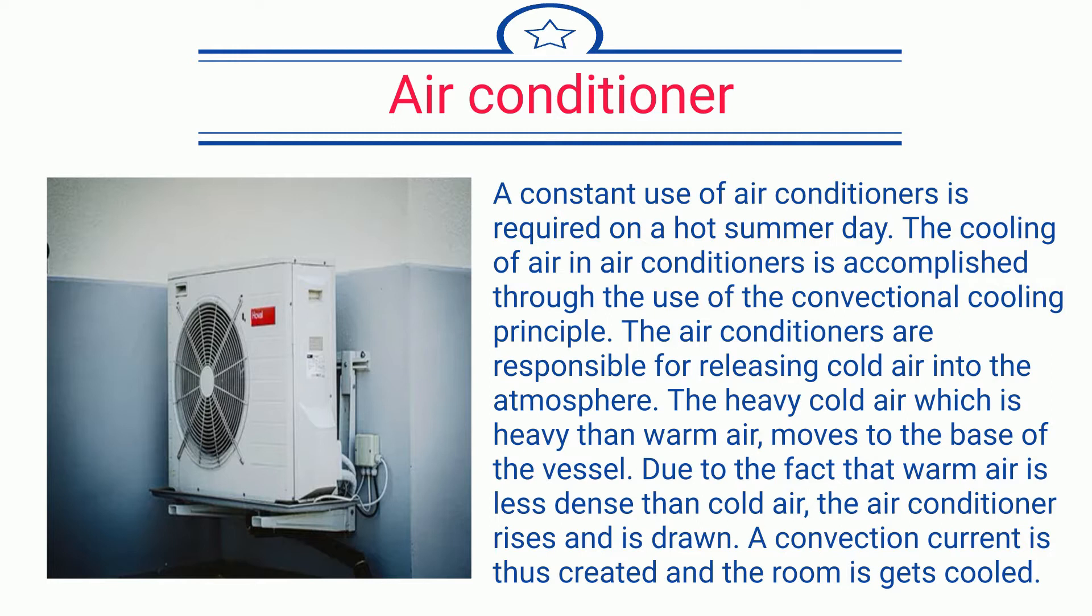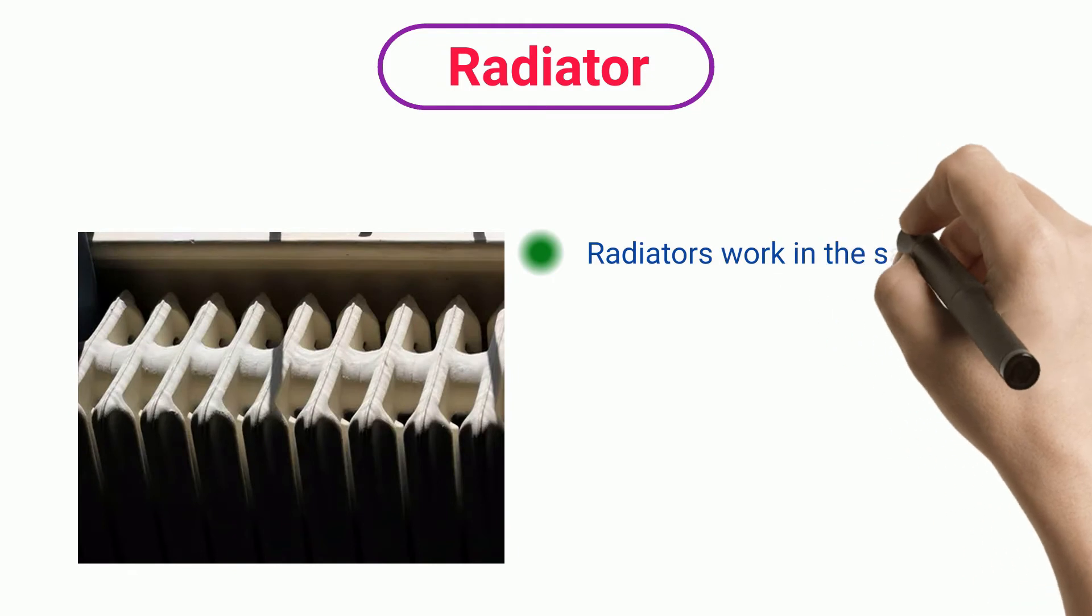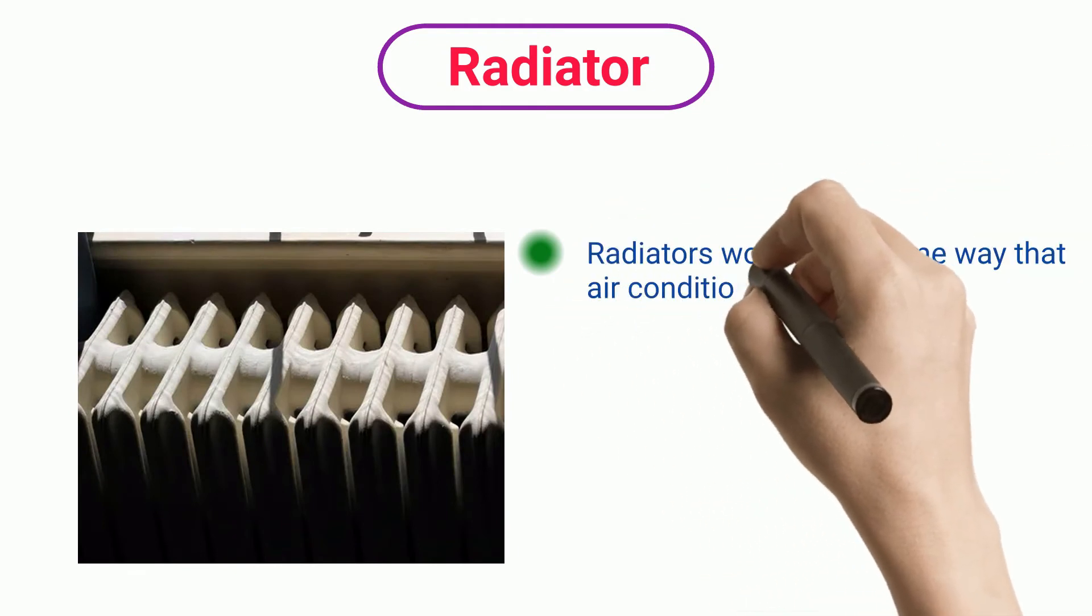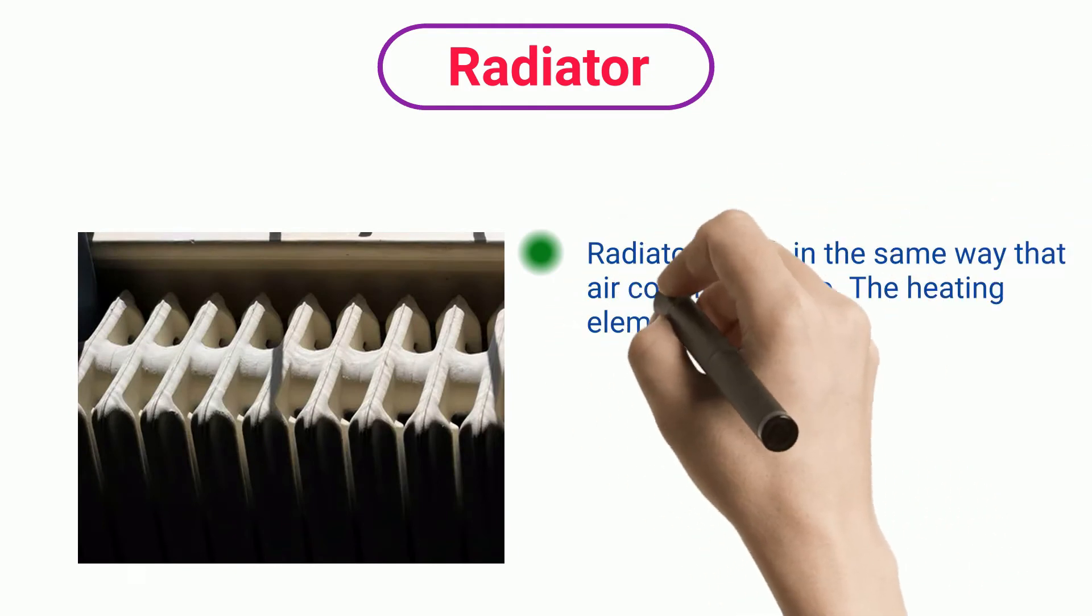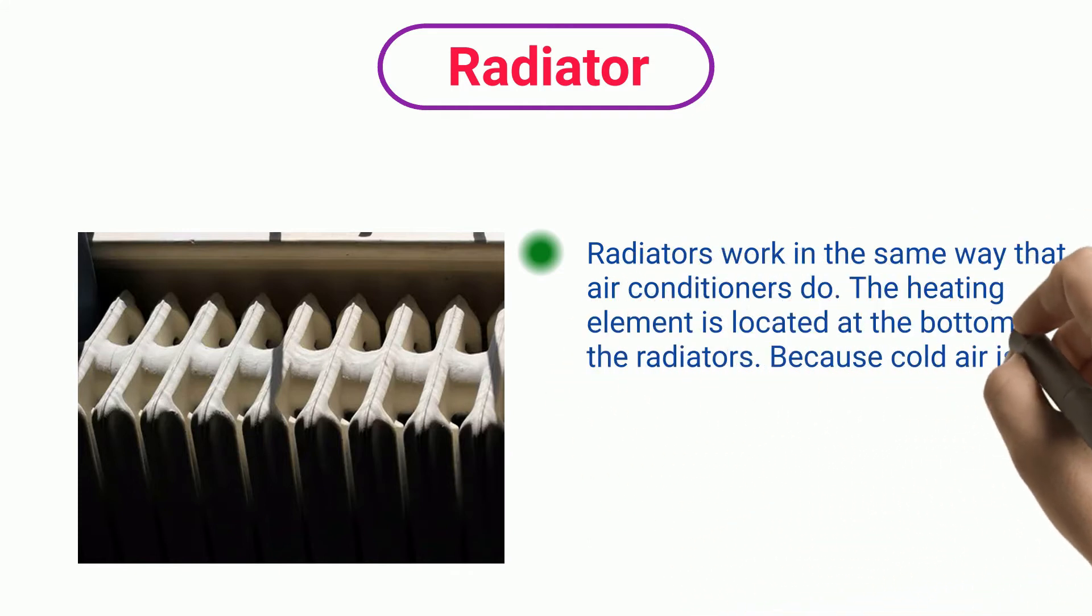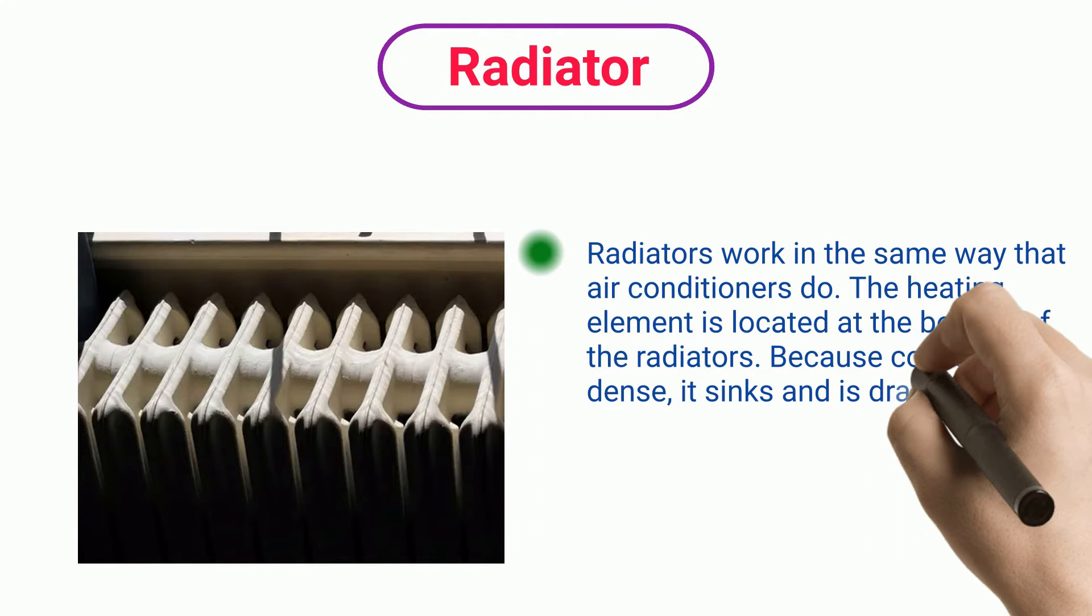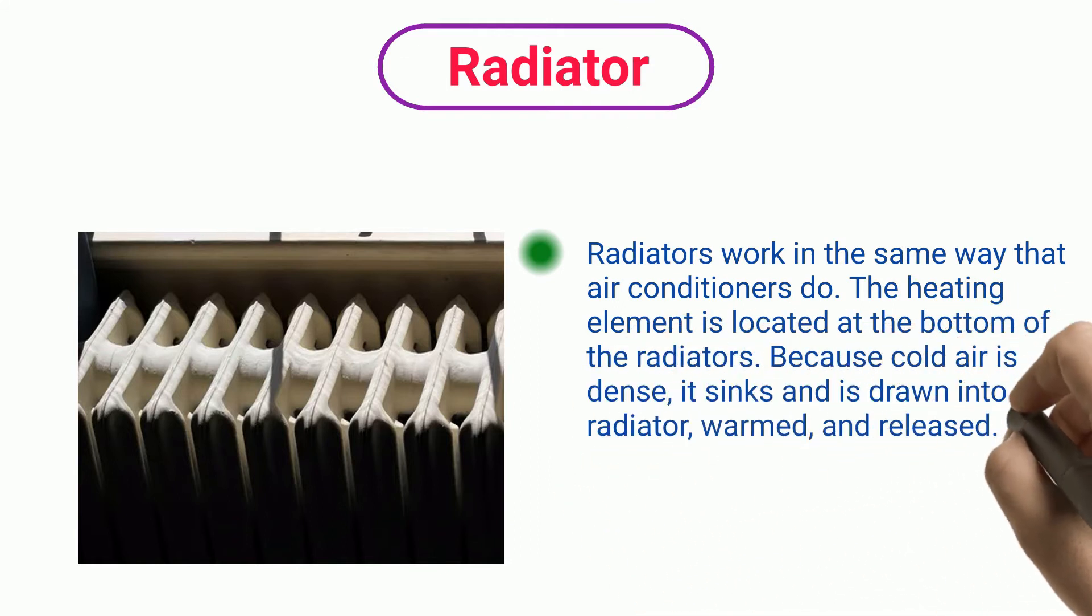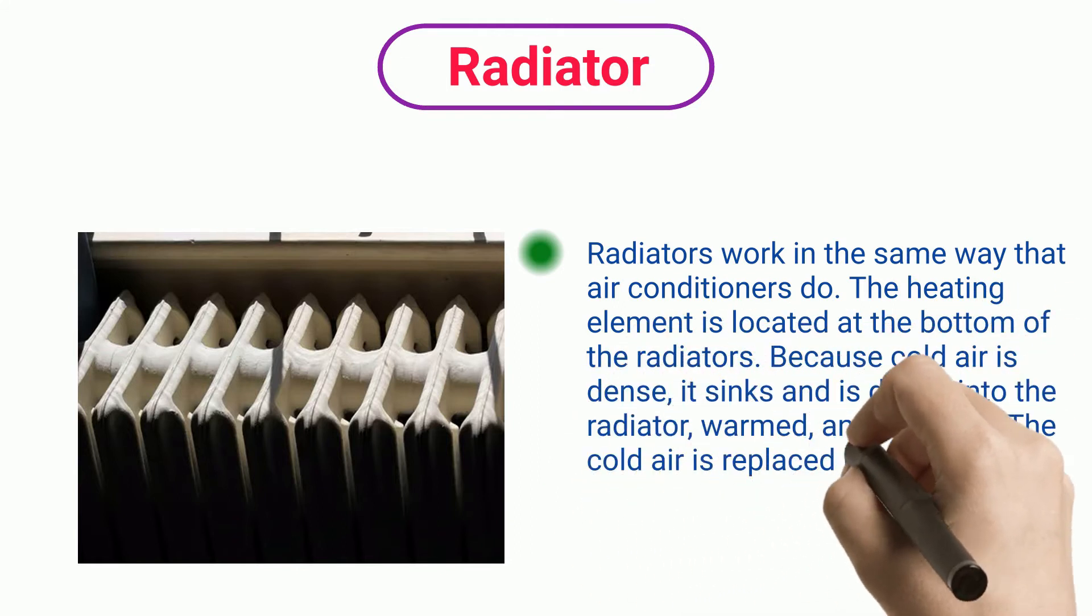Radiator: Radiators work in the same way that air conditioners do. The heating element is located at the bottom of radiators. Because cold air is dense, it sinks and is drawn into the radiator, warmed, and released. The cold air is replaced by hot air, creating a convection current.